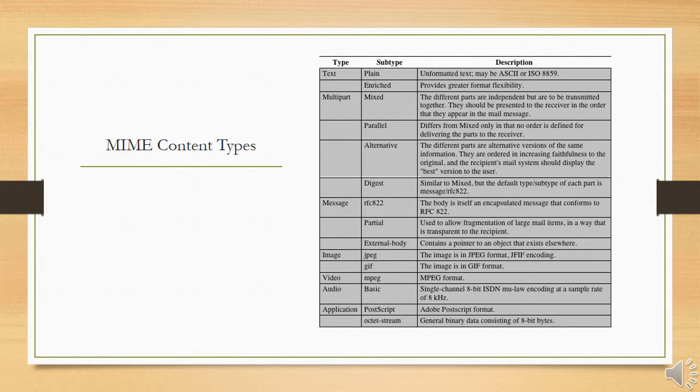The table here lists the content types specified in RFC 2046. There are seven different major types of content and a total of 15 subtypes.